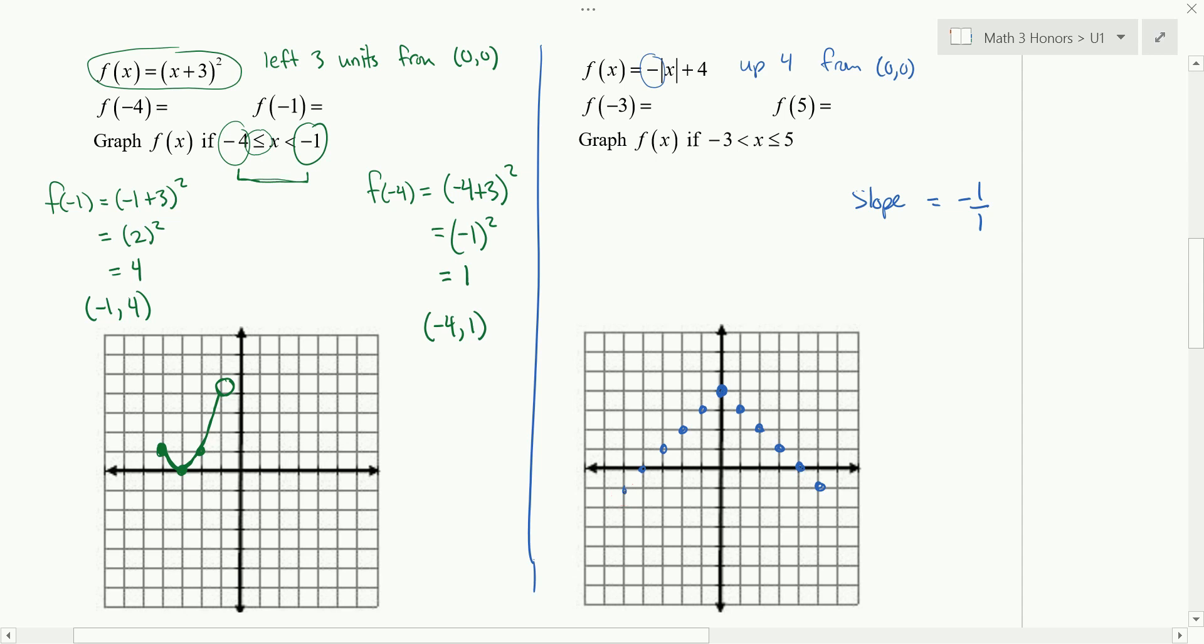But we don't want to continue it forever, because we do have a restriction here. And so we want to actually start when x is negative three. So we don't want those points. And then we want to end when x is five. And I think that's as far as mine goes.